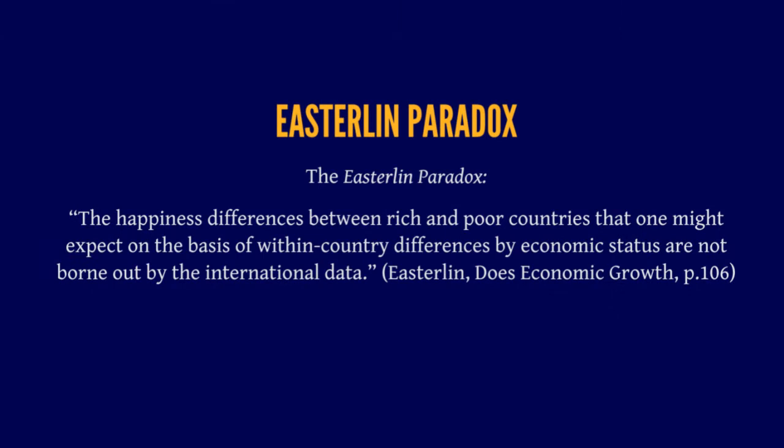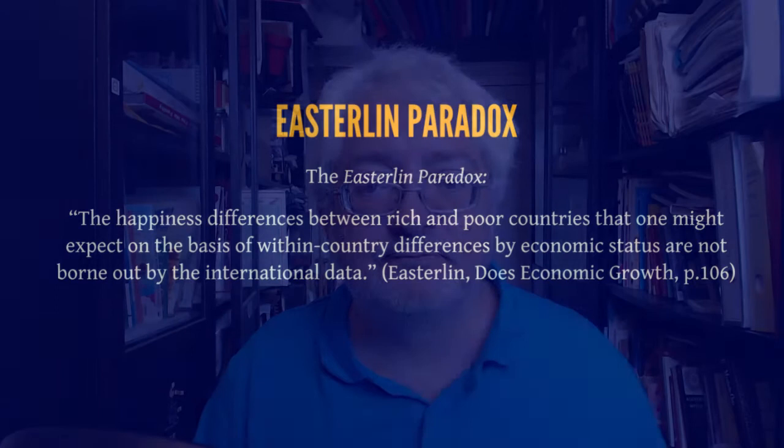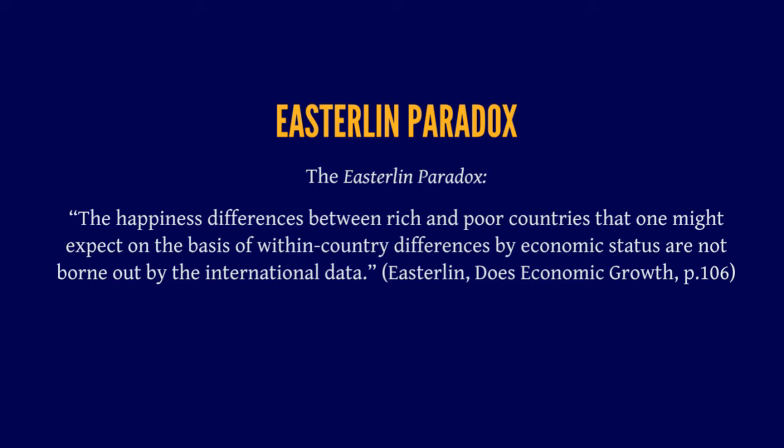Here is how it is formulated: the Easterlin paradox is the observation that the happiness differences between rich and poor countries that one might expect on the basis of within-country differences by economic status are not borne out by the international data. In other words, from intra-country differences between rich and poor, we would expect richer people to be happier and very poor people to be very unhappy — but this does not show in international comparisons. Poor countries are not unhappier than rich countries, and even very poor countries like Cuba or Egypt can be among the happiest.